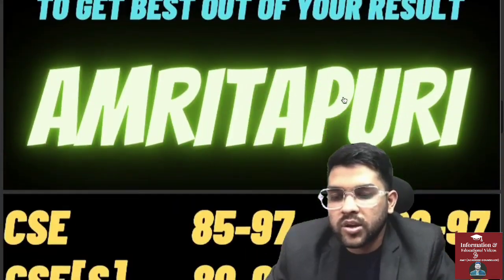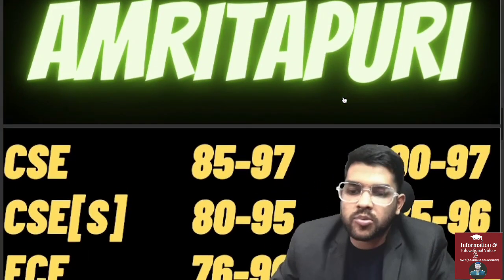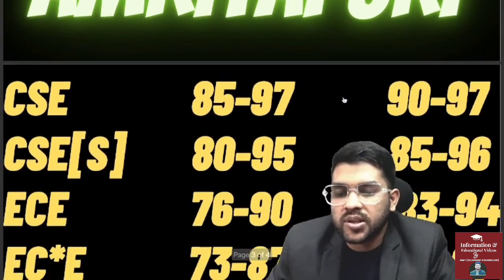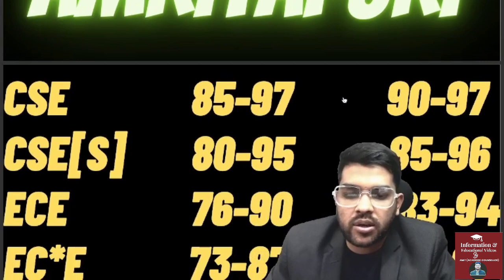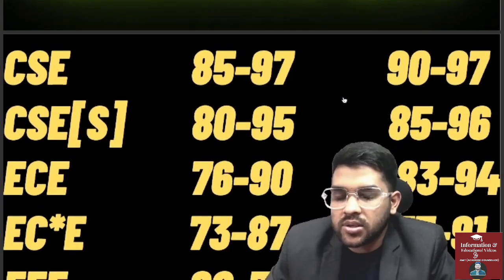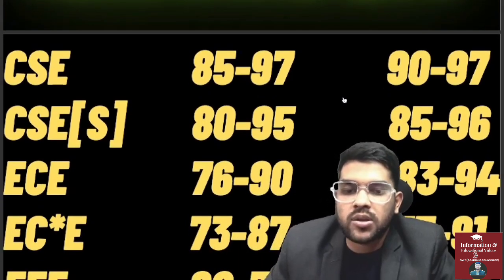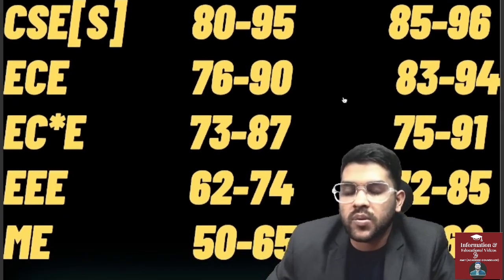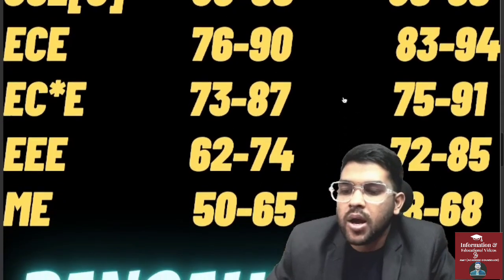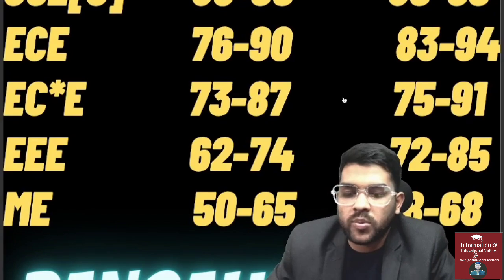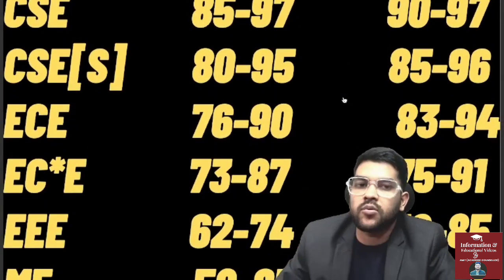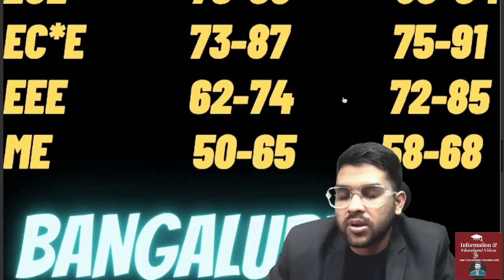Now for Amritapuri campus: CSE 85 to 97 for home state — here home state is for Kerala students — and 90 to 97 for other state. CSE specialization 80 to 95 for home state and 85 to 96 for other state. EC 76 to 90 for home state and 83 to 94 for other state. Electronics and computer engineering 73 to 87 for home state and 75 to 91 for other state. Mechanical 62 to 74 for home state and 72 to 85 for other state. Mechanical specialization 50 to 65 for home state and 58 to 68 for other state.